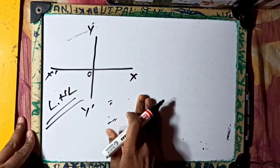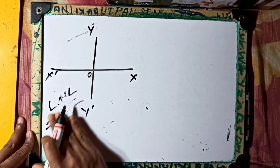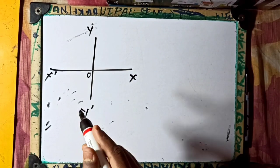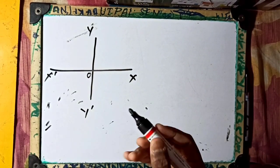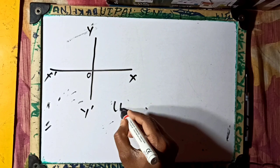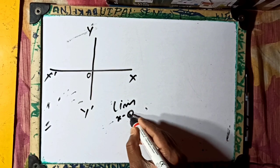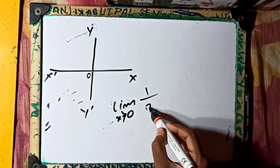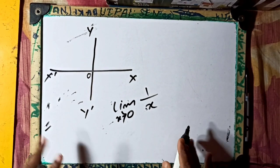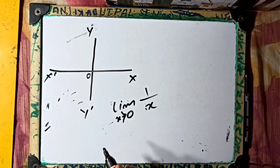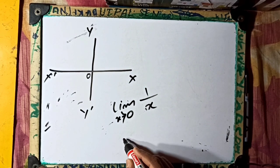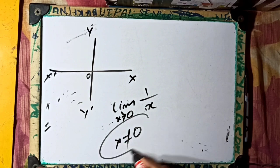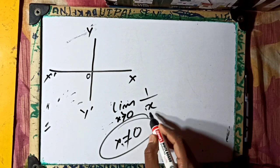The limit is x tends to 0. We check the equation for the left-hand limit. Then the limit is 0, x is 0 to 0, and x is not equal to 0.